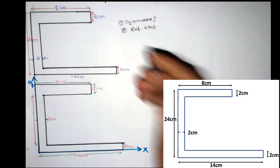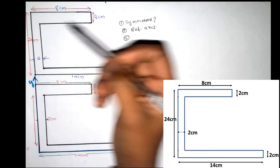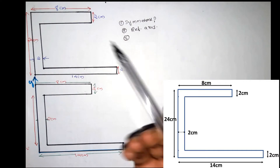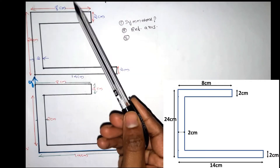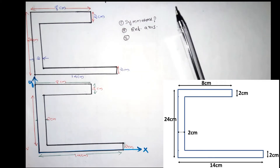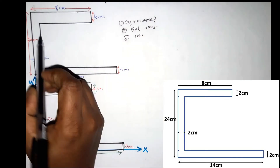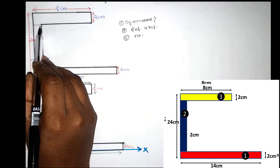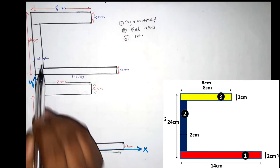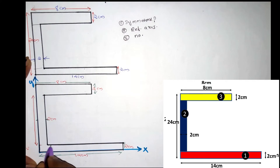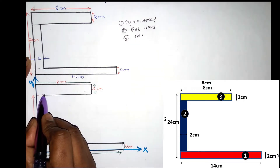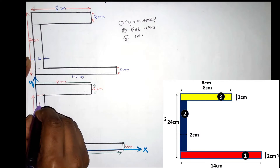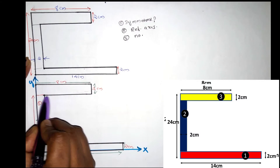The third step is to divide the figure. We are going to make a full section. We will mark a full rectangle — we call this rectangle zero. This rectangle is 1, this rectangle is 2, and this rectangle is 3.